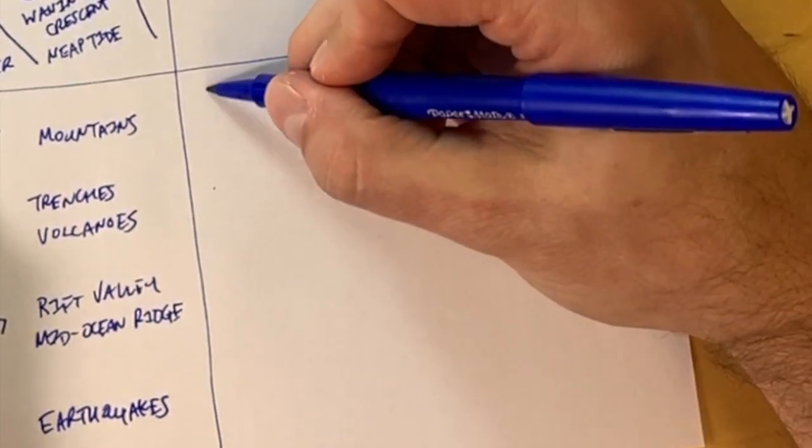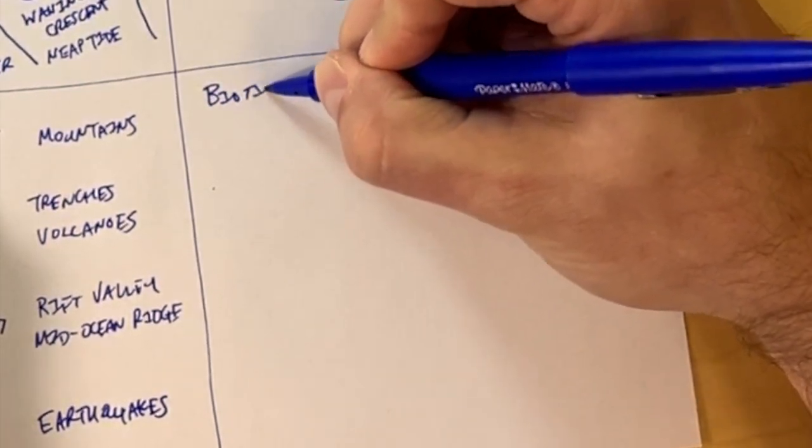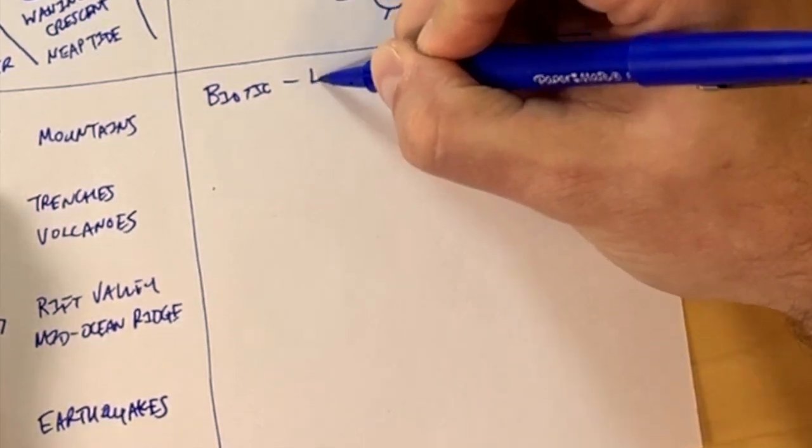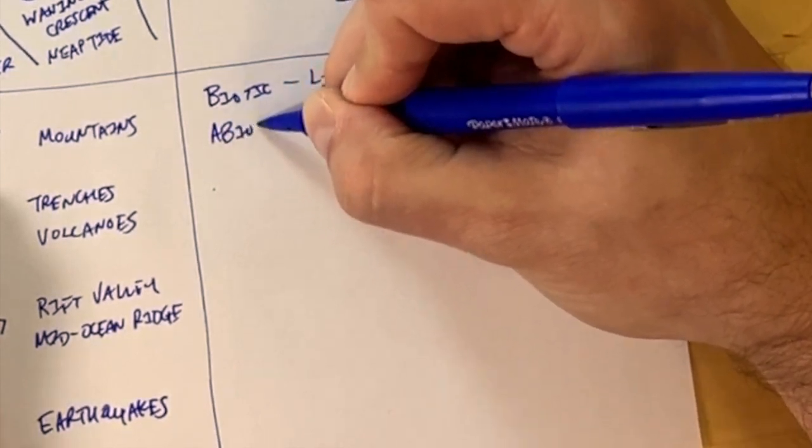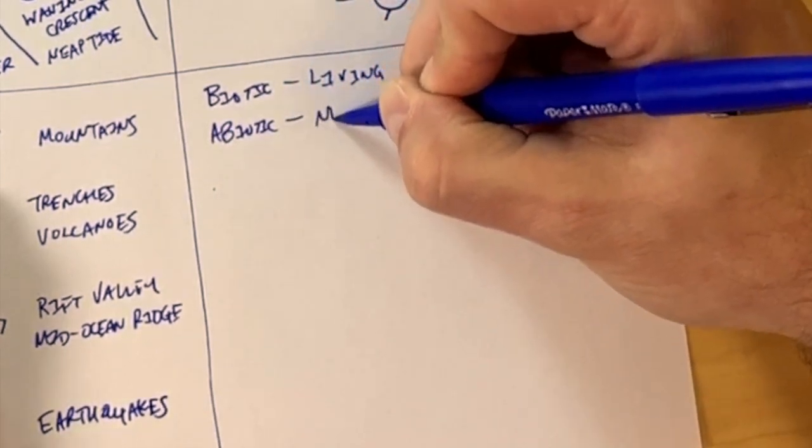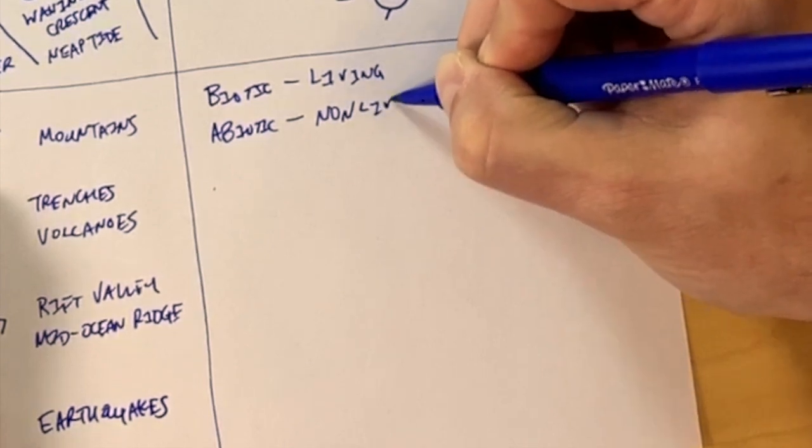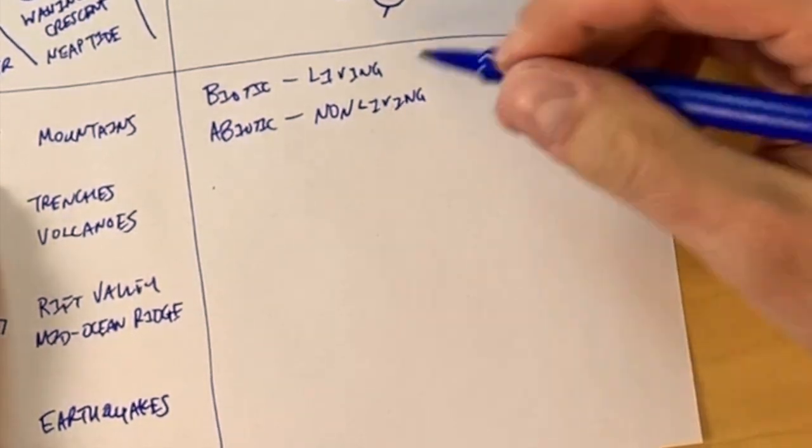Lastly, we're going to talk about some life sciences in this bottom right-hand corner and just help you to remember some common terms. Biotic and abiotic. Biotic means living. Abiotic means non-living. The A means non.